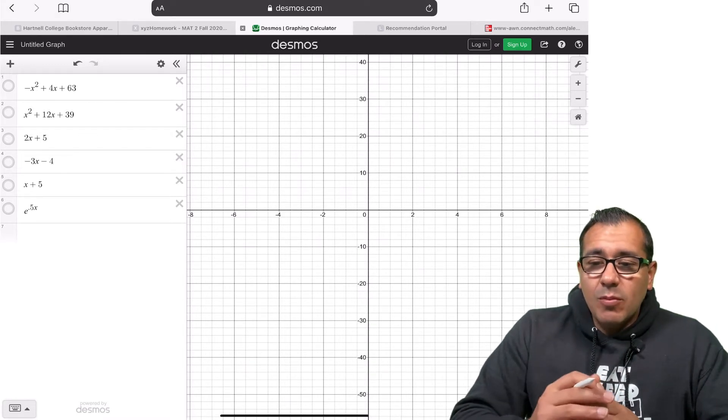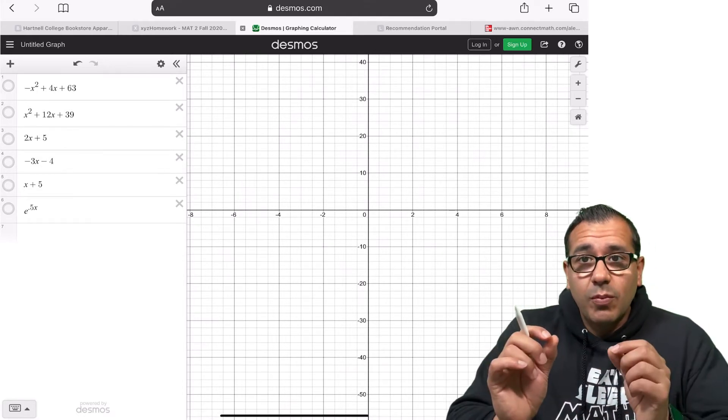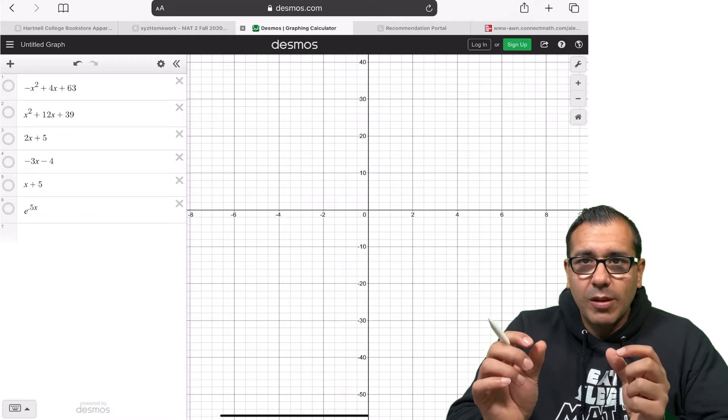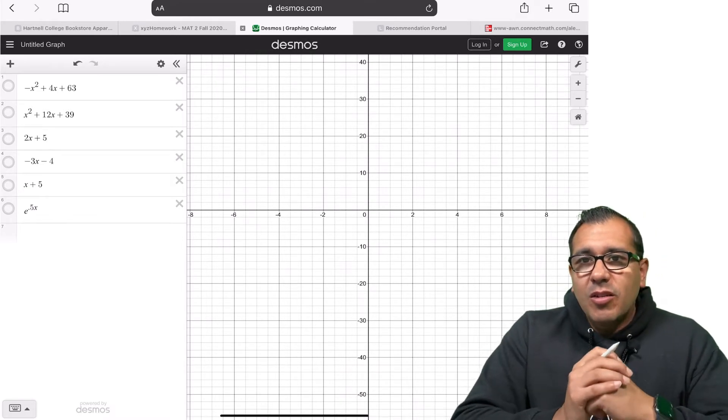And sometimes we need to show our work, sometimes we don't. Sometimes we just need to find those two points if there's two points where they intersect and use that to further do some math.